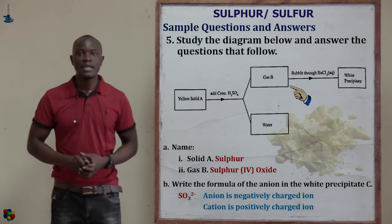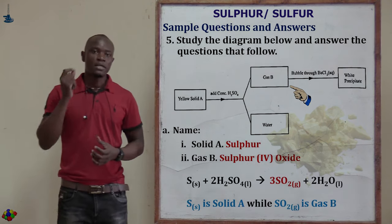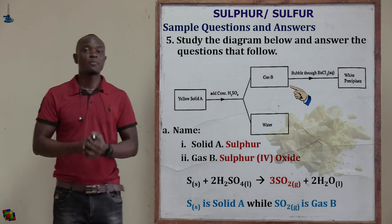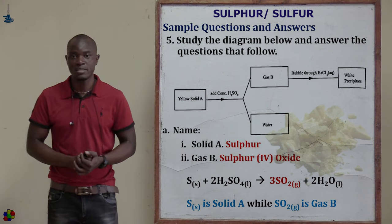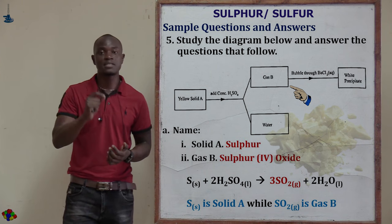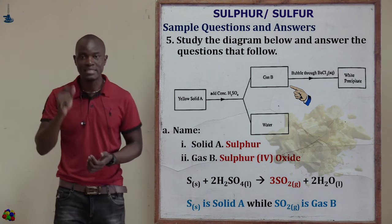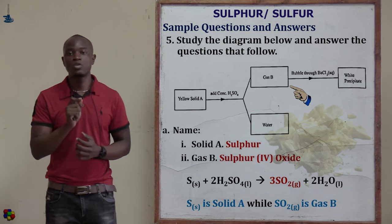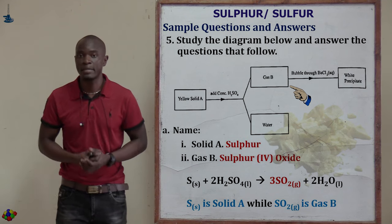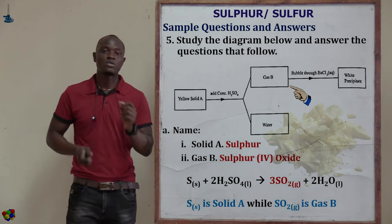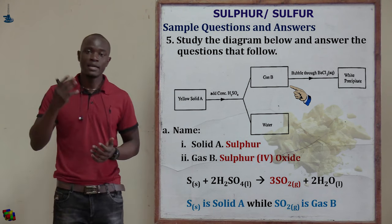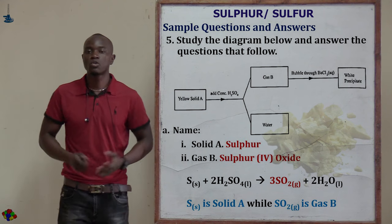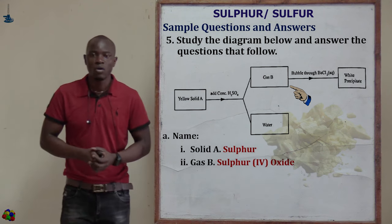Roman numeral II asks: name gas B. In the chemical properties of sulfur, sulfur does not react with dilute acids but reacts with oxidizing acids such as concentrated sulfuric acid and concentrated nitric acid. If sulfur reacts with concentrated sulfuric acid, we get sulfur dioxide gas and water. So gas B is sulfur dioxide, SO₂.